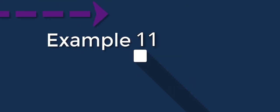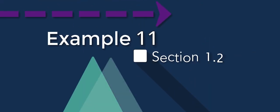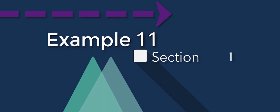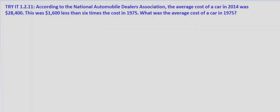All right, in this tried exercise we're told that according to the National Automobile Dealers Association, the average cost of a car in 2014 was $28,400, and that this was $1,600 less than six times the cost in 1975. And we're asked what was the average cost of a car in 1975.